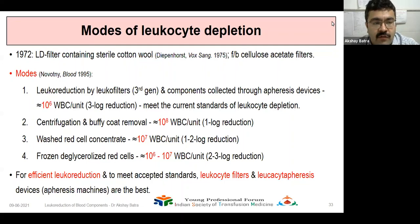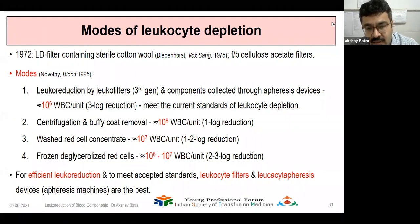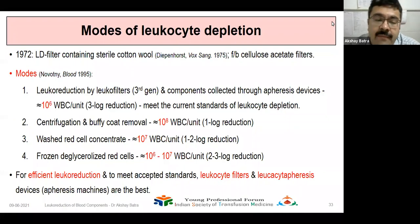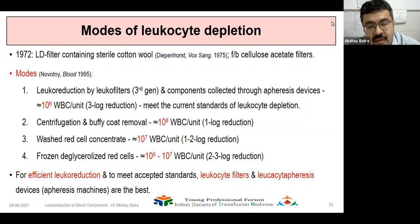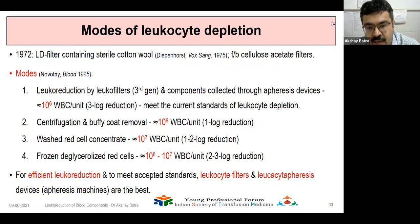The different modes of leukocyte depletion: leukodepletion by leukofilter was first introduced in 1972 using cellulose acetate filters. Currently we use third-generation leukofilters and leukoreduction by apheresis devices, both of which give approximately 10^6 WBCs per unit. Centrifugation buffy coat removal gives a product containing 10^8 WBCs per unit. Washing gives 10^7 WBCs. Freezing and deglycerolization gives approximately 10^6 to 10^7, entailing 2–3 log reduction. For efficient leukoreduction to meet accepted standards, leukocyte filters and leukocytapheresis devices are the best.